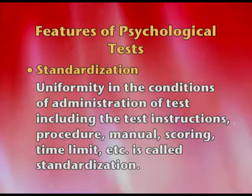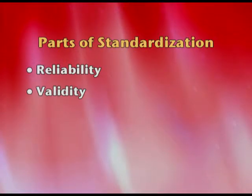Standardization is done through a process of research and has three important parts: reliability, validity, and norms. Reliability means the test must be trustworthy — the scores obtained today and after six months should not vary beyond a margin of error, or you cannot rely on the test. This is test-retest reliability: you test it once, then after a gap test it again, and if you get the same results within a margin of error, the test is reliable.